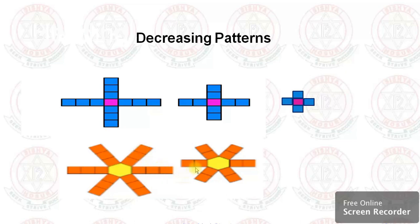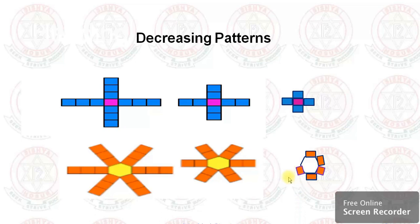So the next will be: first one hexagon, then around that one rectangle on each side — and the color will be orange. Same way you have to do the worksheet: first observe the pattern, see in what way it is increasing or decreasing, then find out the answer.